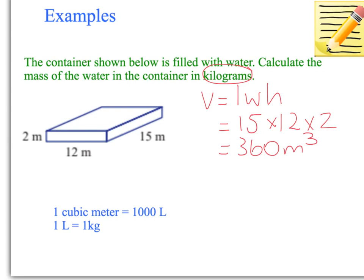15 times 12 times 2 is 360 meters cubed. We're in meters, but we've been asked to work it out in kilograms. So we need to keep going. We need to convert it to liters, then we can work out how many kilograms. One cubic meter is 1,000 liters. So we've got 360 cubic meters. So we need to do 360 times by 1,000. That will give us the capacity. So capacity equals 360,000 liters.